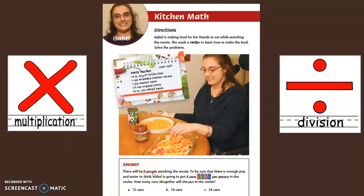There are six people that are going to watch the movie, and Isabel wants to put four cans per person. So that's six times the four cans per person, giving us twelve, sixteen, or twenty-four. Yes, twenty-four. Six times four is twenty-four.